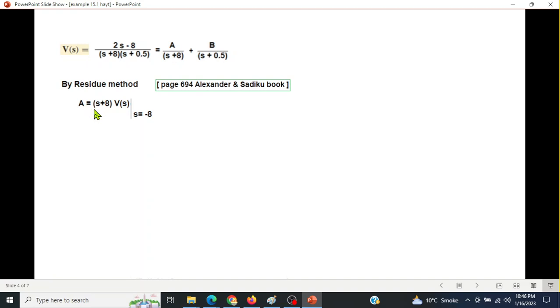In the residue method, for A we write the denominator of A multiplied by V(S), then put the condition S+8=0, meaning S=-8. Simplifying, S+8 and S+8 get cancelled. Now plugging in the value of S, solving gives A = 3.2.